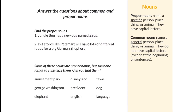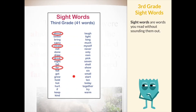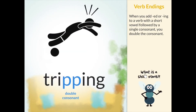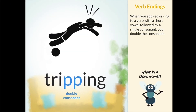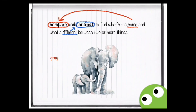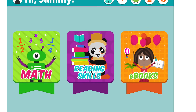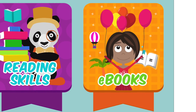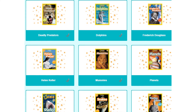Our reading videos teach kids grade-appropriate grammar such as capitalization and punctuation, important grade-specific vocabulary, spelling strategies such as when to double a consonant, and reading comprehension skills such as finding the main idea or comparing and contrasting information.